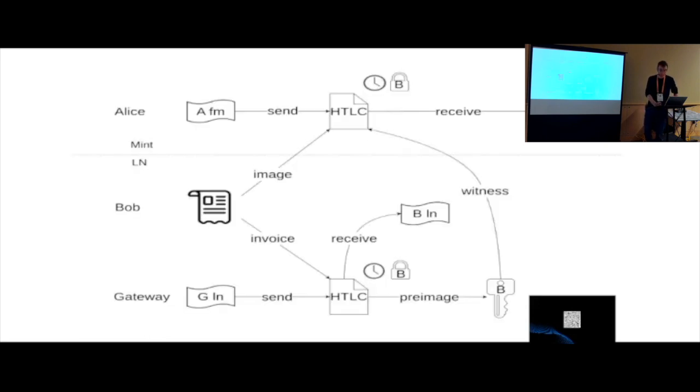And so the Gateway creates this HTLC to Bob which is locked by the same preimage as you can see also by me. And then eventually this payment goes through and the way how HTLCs work is that the Gateway ends up with the preimage from Bob. And then the Gateway can redeem the HTLC from the Mint and get Fedimint sats. And in the end the Gateway has kind of swapped between from Lightning sats to Fedimint sats but it has gotten more coins number-wise. So it gained value.